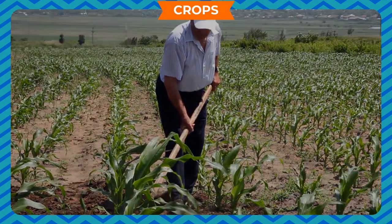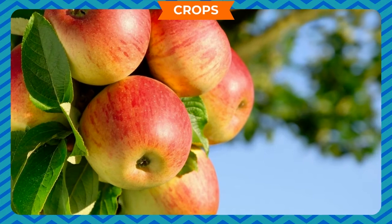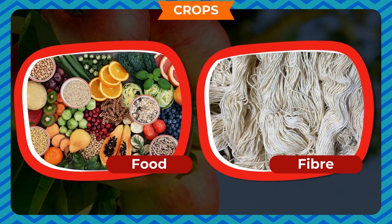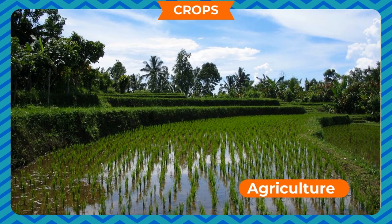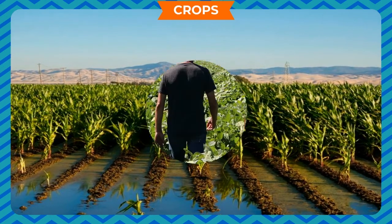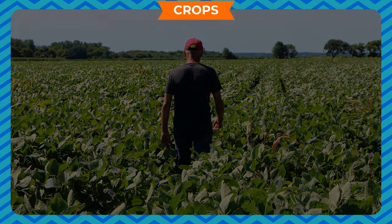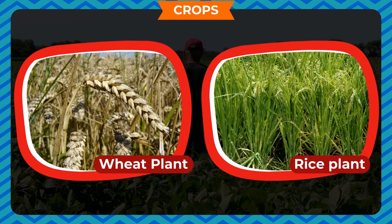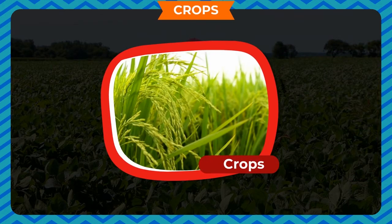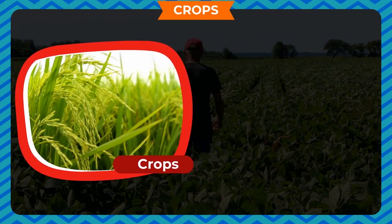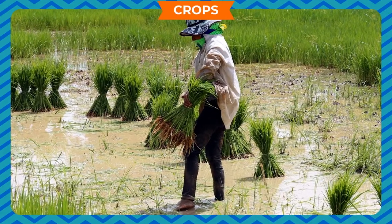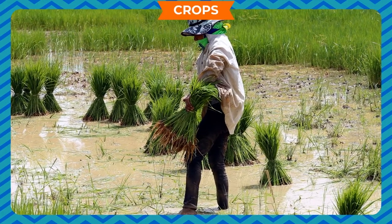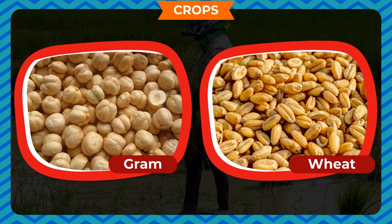Crops: plants produce food, fiber, juice, and serve us in many ways. We grow plants on a large scale to get more food or grains. The process of producing food, fiber, and many other products by growing certain plants on a large scale is called agriculture. The same kind of plants grown in large volume in one field, such as wheat or rice, are known as crops. The large area in which a crop is grown is called a farm.